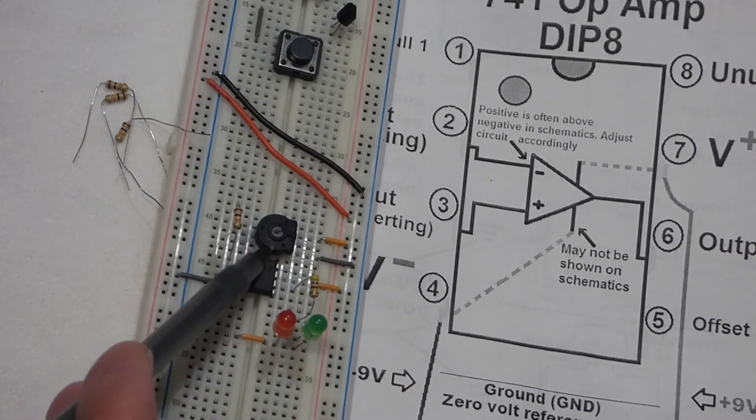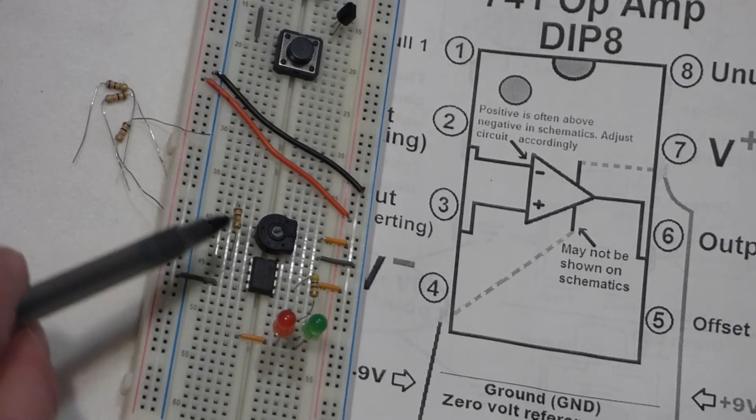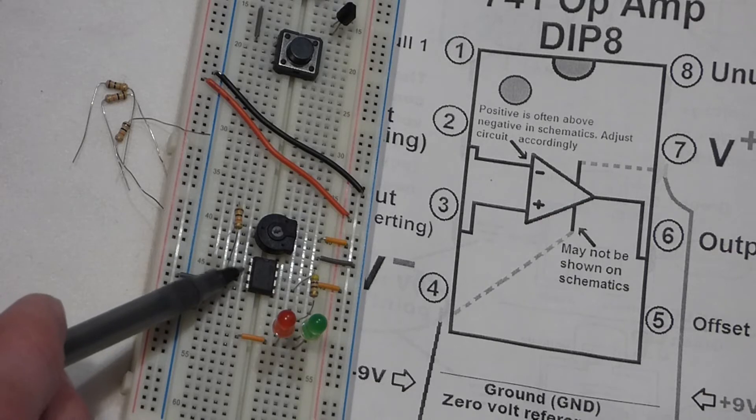You definitely want one that can handle the current, and this is a 5 kilo ohm trim pot. Now here is a 10 kilo ohm resistor that connects the trim pot to the inverting pin.